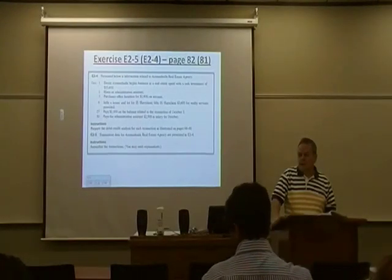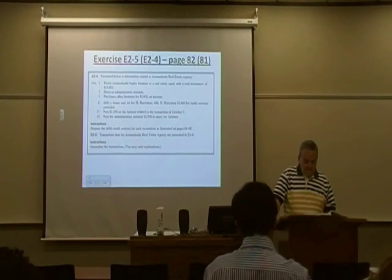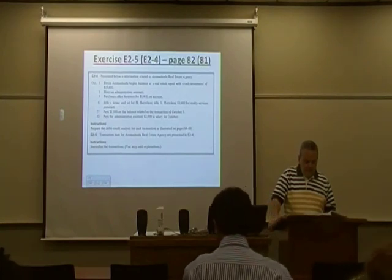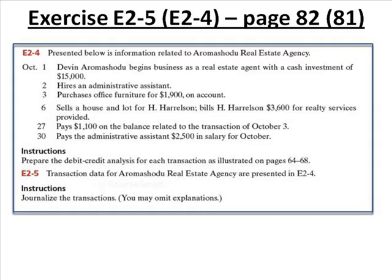I went at exercise 2-5 actually, but most of the information we're looking for is in 2-4. It's on page 81 and 82 in your book. I'll start at the bottom of page 81 and ask you to read along with me. Exercise 2-4 says: present below is information related to our real estate agency. Three transactions there and then three more at the top of the next page. Prepare the debit-credit analysis for each transaction as illustrated in the textbook.